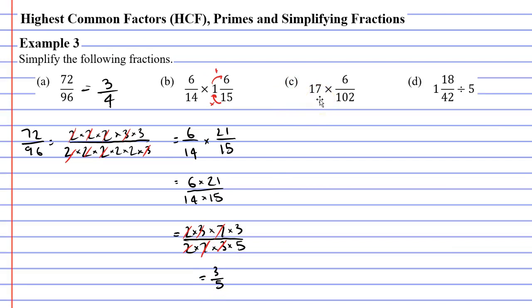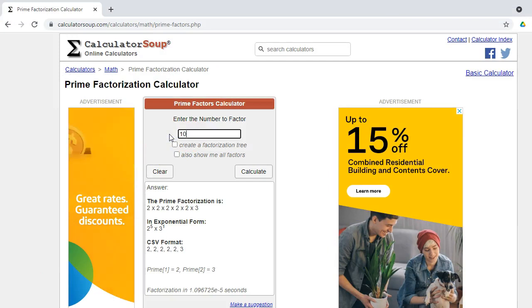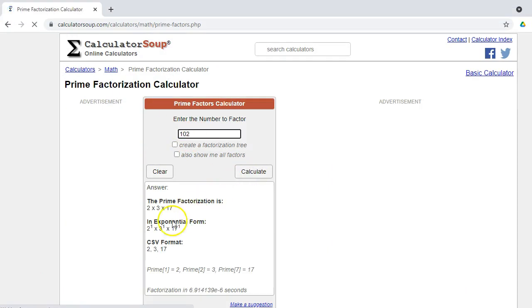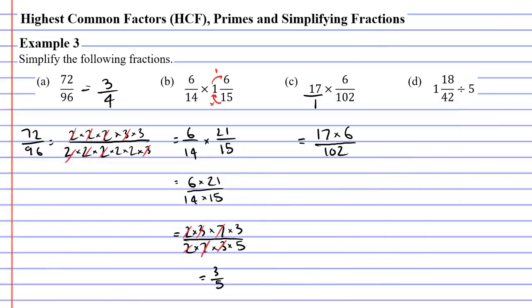Okay, we'll move on to question C now. We've got 17 times 6 over 102. Now, when you multiply fractions, you need both numbers to be a fraction. That's not overly difficult. We can just make 17, 17 over 1. So, when we multiply the top two numbers, we get 17 times 6. And when we do the bottom two numbers, 1 times 102 is just 102. Now, I'm going to cheat again. And I'm going to find the prime factors for 102 using the website. So, 102. Calculate. This comes from 2 times 3 times 17. So, my denominator is going to be 2 times 3 times 17. And for the numerator, I've got 17. And 6 is just 2 times 3. So, 17 times 2 times 3.